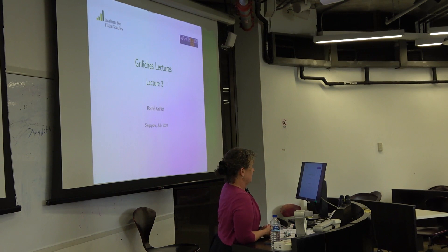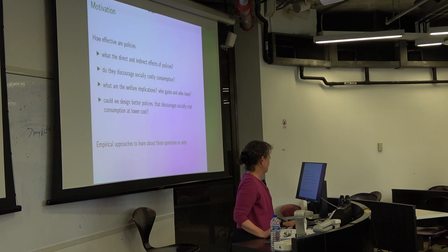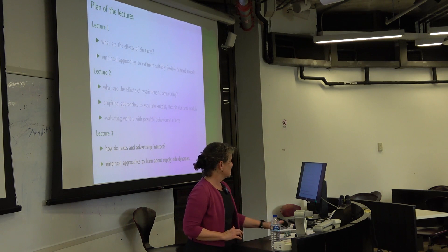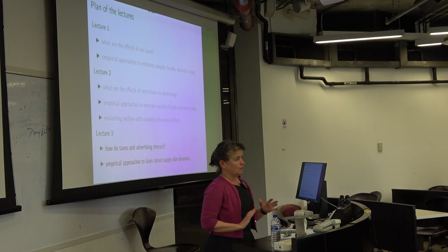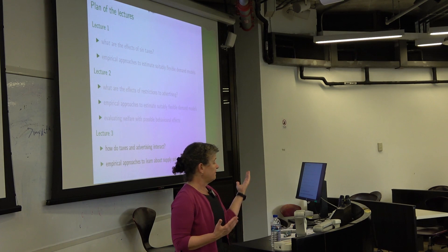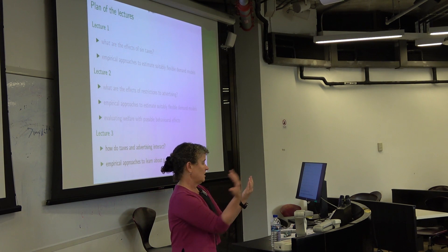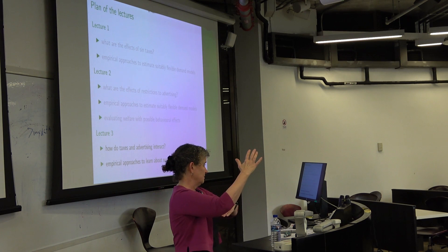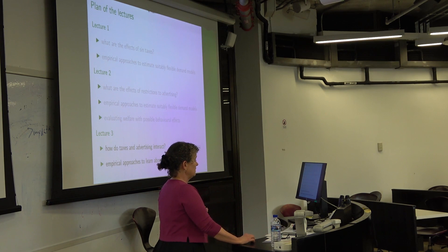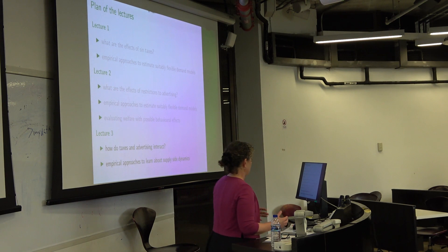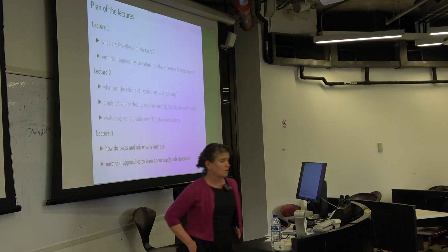In this lecture, I'm going to repeat quite a bit of what I said in the previous two lectures, but put them together and think about the two policies jointly — how they interact. So what happens if we want to implement both a tax and an advertising ban or restriction? But also, even without doing both, I'm interested in how advertising affects the shape of demand and how firms may re-optimize on advertising when prices change.